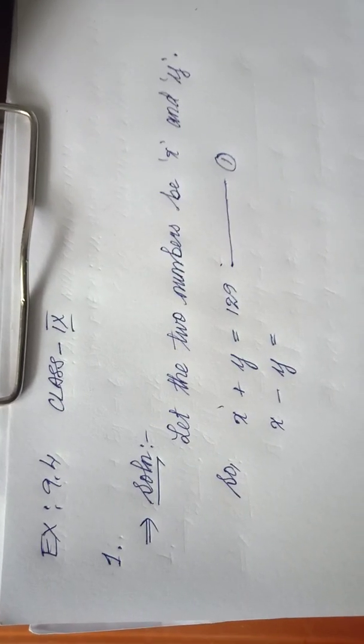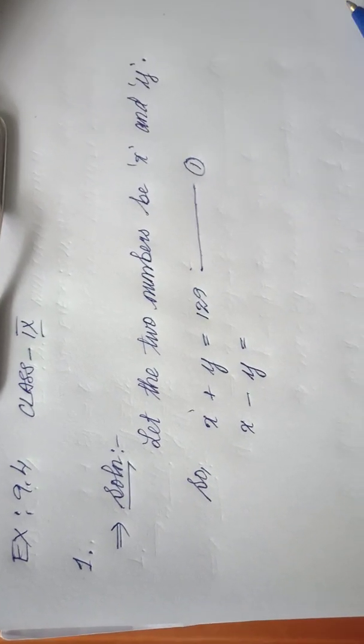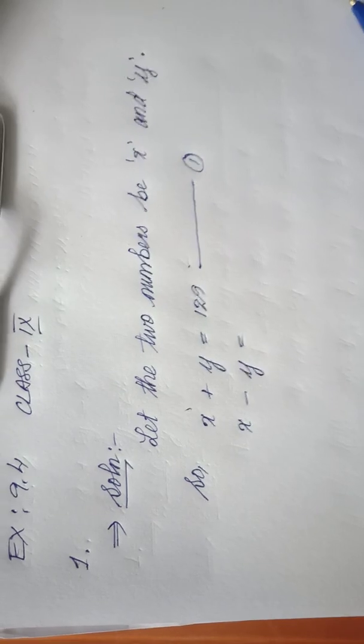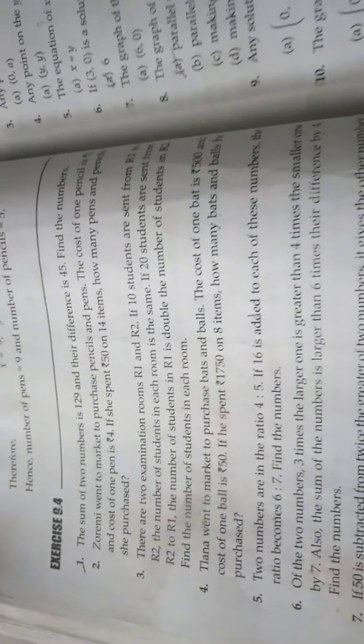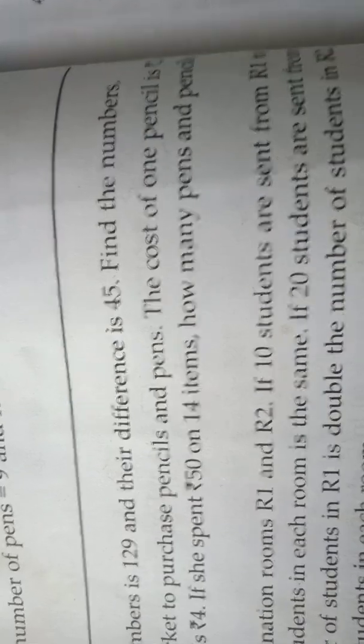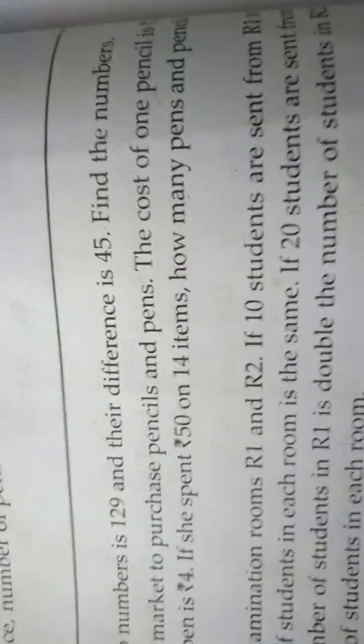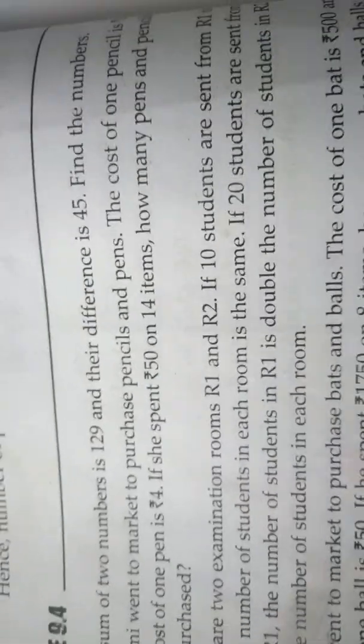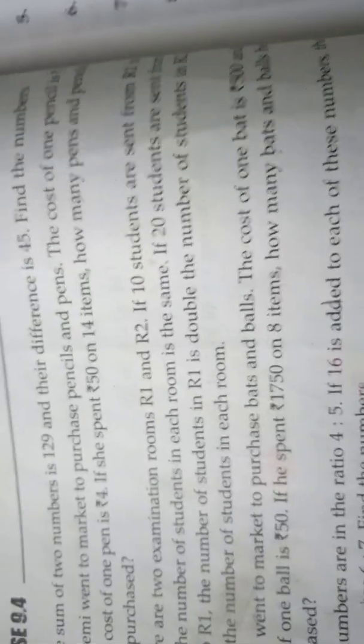Okay, last nine exercise 9.4, word problems linear equation in two variables, word problems. So the question states that the sum of two numbers is 129 and the difference is 45. The question says you will be having two numbers. If we add them it will become 129, if we subtract them it will become 45, and we have to find the numbers.